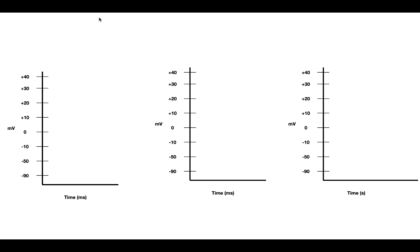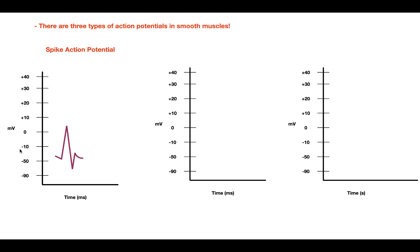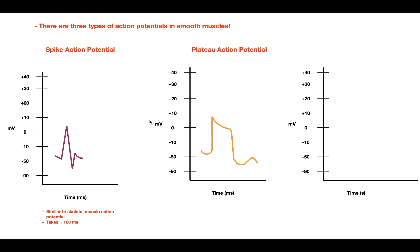There are three types of action potentials in smooth muscles. The first one is called the spike action potential, which looks like this and takes place over around 100 milliseconds. This type is going to be similar to the action potential seen in skeletal muscle. The second type is the plateau action potential.